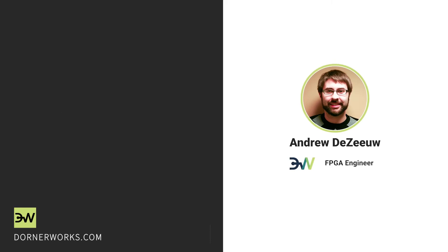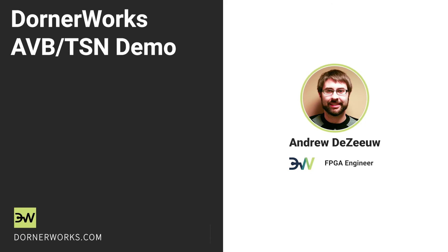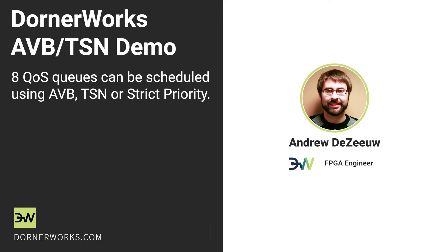One thing that came around with AVB is the idea of strict priority scheduling, where there are eight QoS queues, each of which can be scheduled using AVB bandwidth partitioning, TSN time partitioning, as well as just strict priority.